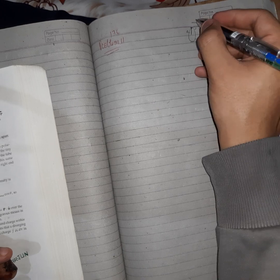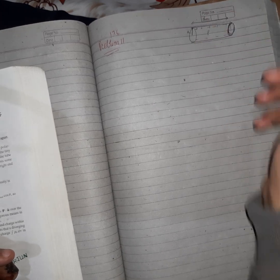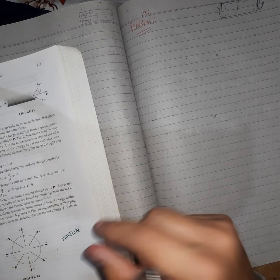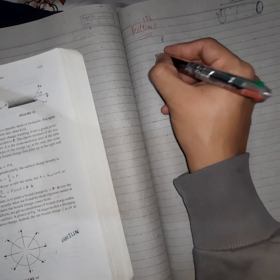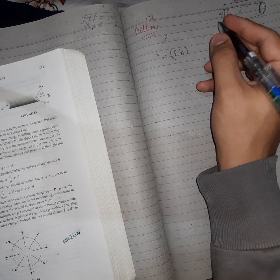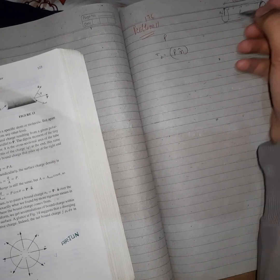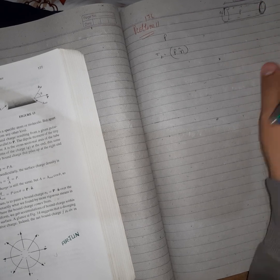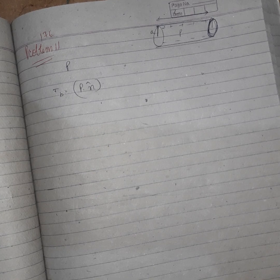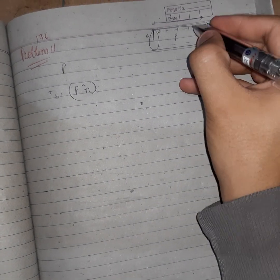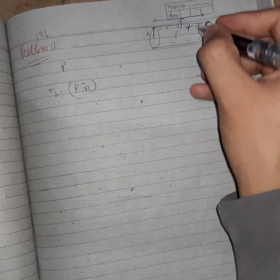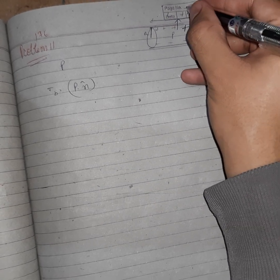So suppose we need to calculate the bound charges. First of all, sigma_b is p into n cap in the direction of n cap. For the normal, in this case there will be two normals. Let me just focus and zoom. Normal upside the cylinder will be positive n cap and downside will be negative n cap.